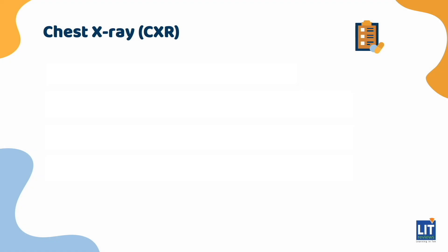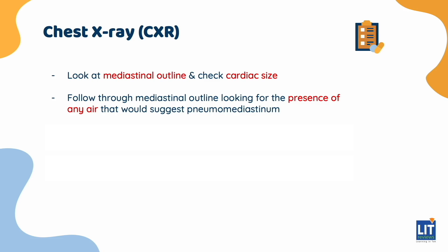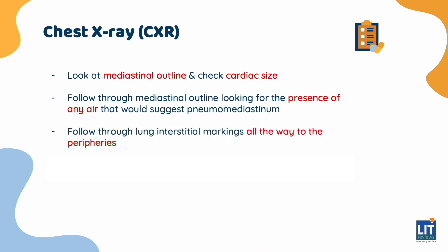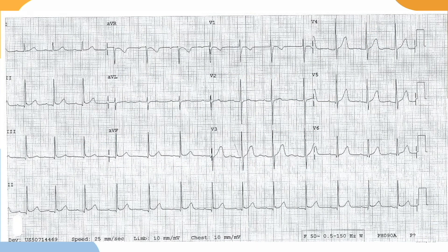On the chest X-ray, look at the mediastinal outline and check the cardiac size. If the cardiothoracic ratio exceeds 0.5, or in neonates 0.6, there is cardiomegaly. Do take note that if the film was a supine film or poorly inspired, it would not be easy to assess the cardiac size. Make sure to follow through the mediastinal outline looking for the presence of any air that would suggest pneumomediastinum. Also look for the cardiothoracic ratio and follow through the lung interstitial markings to make sure there is no pneumothorax — follow through all the way to the peripheries. It is also important to look for signs of pneumonia or pleural effusions. The ECG should be systematically reviewed, specifically looking at rate, rhythm, axis, PR interval, QRS waves, ST-T changes, and the QT interval.